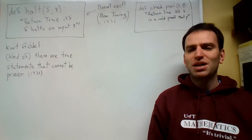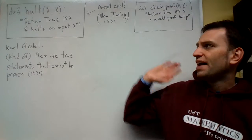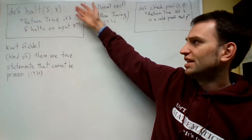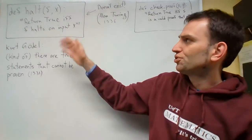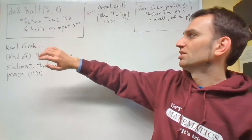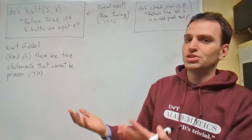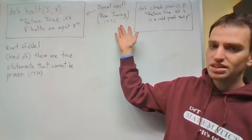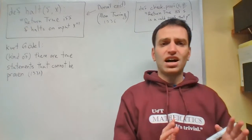In this video, I want to talk about a fairly amazing consequence of the fact that you cannot write the function halt — that returns true if and only if the function f halts on input x, meaning it does not produce an infinite loop on input x. That's a result due to Alan Turing. And the consequence is this.